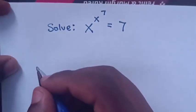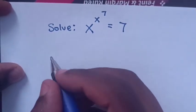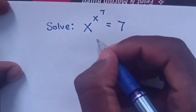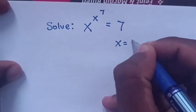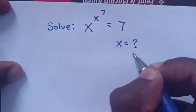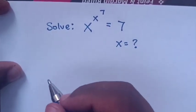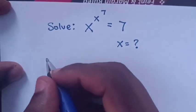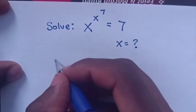Hello. Solve for x from x power x power 7 is equal to 7.